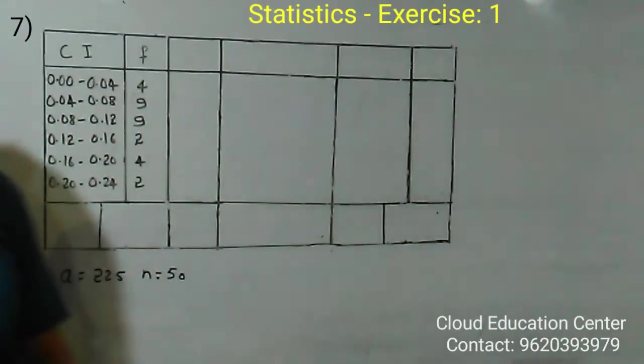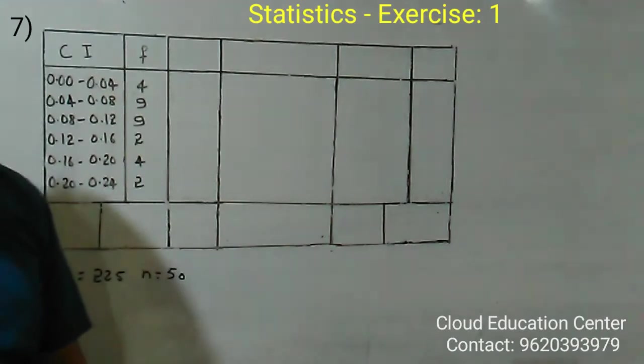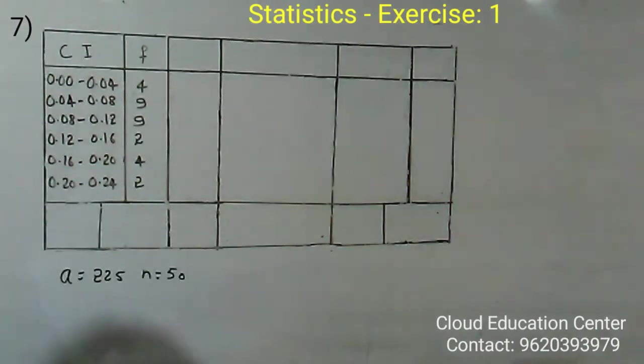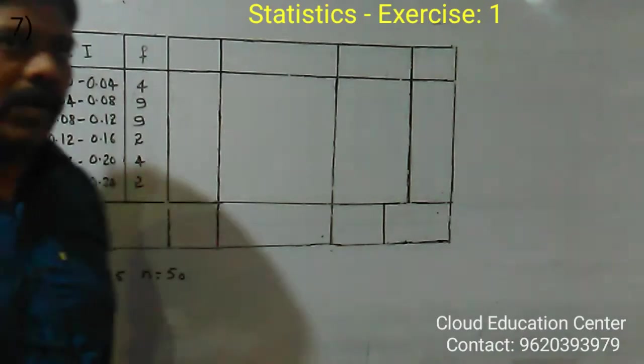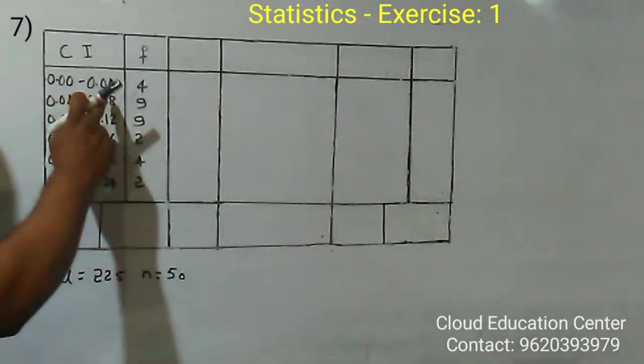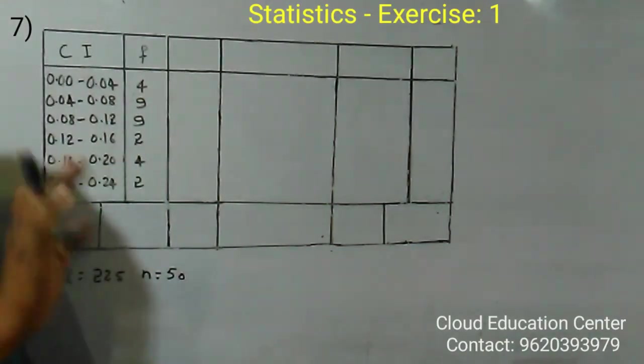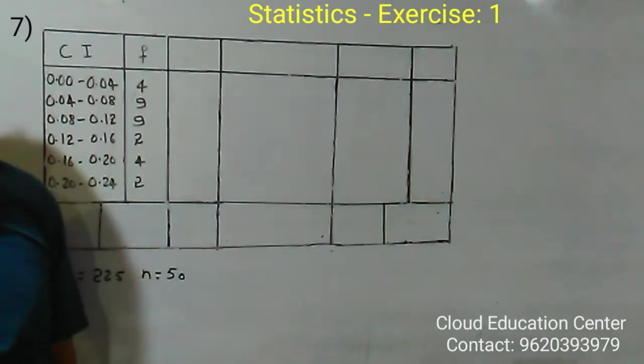First, you know how to find a class mark or mid value. Subtract the lower limit from the upper limit: 0.04 minus 0.00 equals 0.04. Divide by 2 to get 0.02.